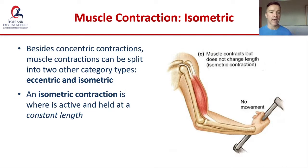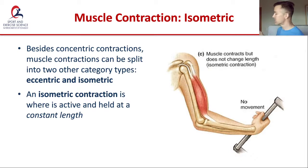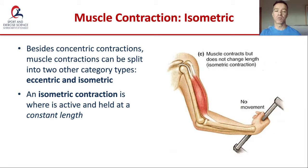Finally, we've got an isometric contraction, where a muscle is active and contracting but is held at a constant length. Isometric — iso meaning equal, metric referring to length — so there's no change in length, but the muscle is generating force. Imagine you had a locked door and tried to pull it open: you could generate force against the handle, but you can't overcome it, so the muscles involved are in an isometric contraction. They are actively working, but there's no change in muscle length — it is neither lengthening nor shortening.